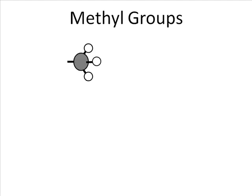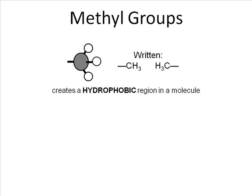The methyl group is a carbon bound to three hydrogens, and then the carbon bound to something else, usually another carbon. Notice how it's written — CH3, HC3, H3C — it's just a left or right convention in a diagram. The carbon is what's bound to other atoms, not the hydrogens. Methyl groups create regions that are hydrophobic within a molecule, so any place we see CH3s or methyl groups, think hydrophobic.